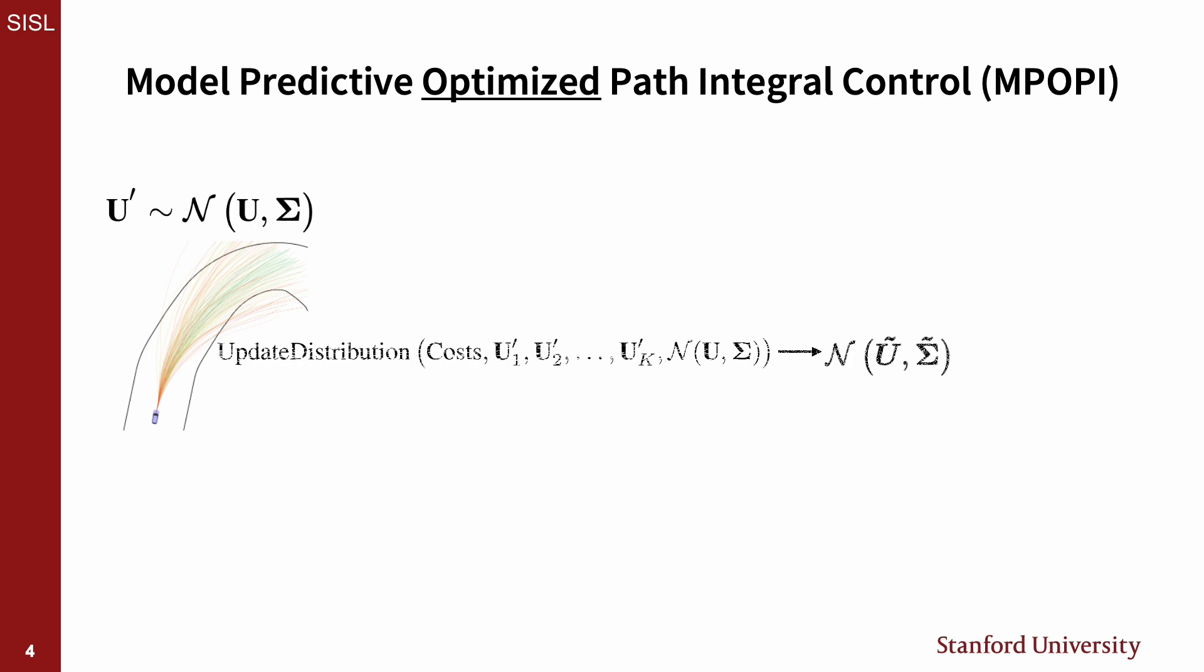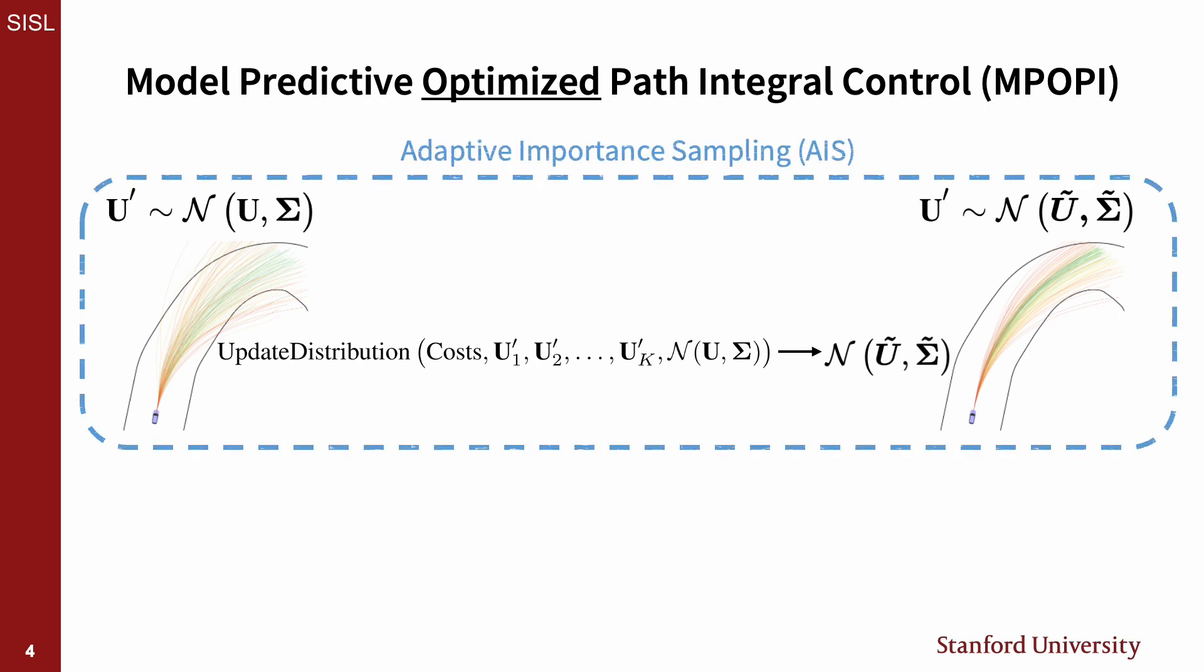This allows us to connect the trajectory cost with a sample and then use these costs to update our distribution, and then we can re-sample from that new distribution. This process is a form of adaptive importance sampling.